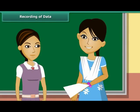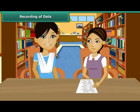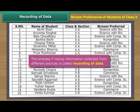Recording of data. Mrs. Sandeep is the academic in charge. She has assigned Sheetal the task of writing the stream preference of all class 10 students. Sheetal collects all requisite details, summarizes them in a single sheet, places it in a file and hands the file over to the academic in charge. The process of listing information collected from different sources is called recording of data.